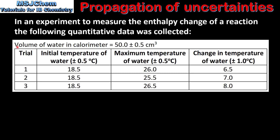The volume of water in the calorimeter was 50.0 ± 0.5 cm³. Three trials were conducted and the initial temperature and the maximum temperature of the water were recorded. By subtracting the initial temperature from the maximum temperature, the change in temperature of the water was calculated. The absolute uncertainty of the thermometer was ± 0.5°C.